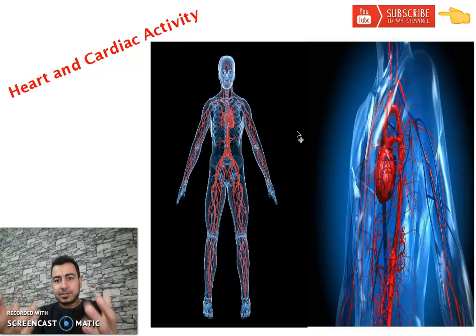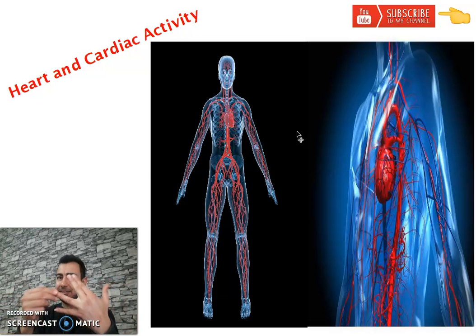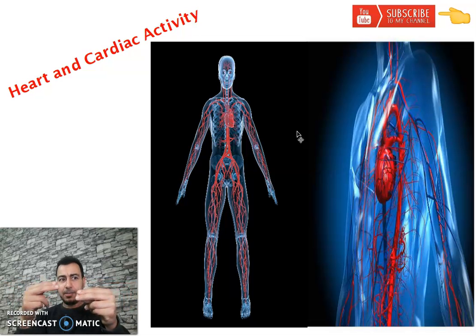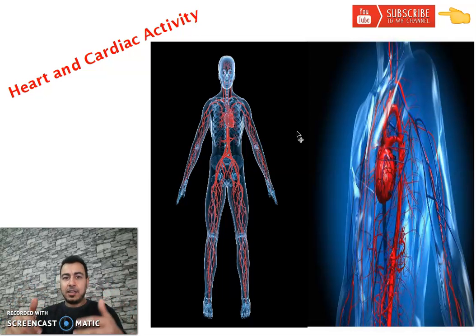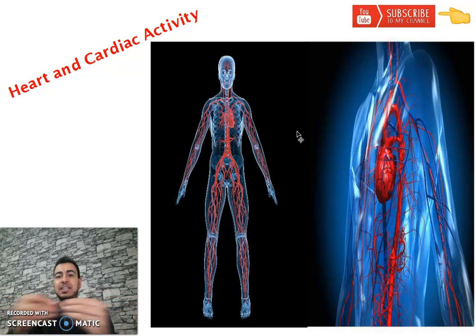We have a system called the circulatory system - الجهاز الدموي. It is made up of the heart and the places where blood passes through. Just like water passes through pipes in a house, blood must pass through pipes in the body called vessels - أوعية - blood vessels, الأوعية الدموية.